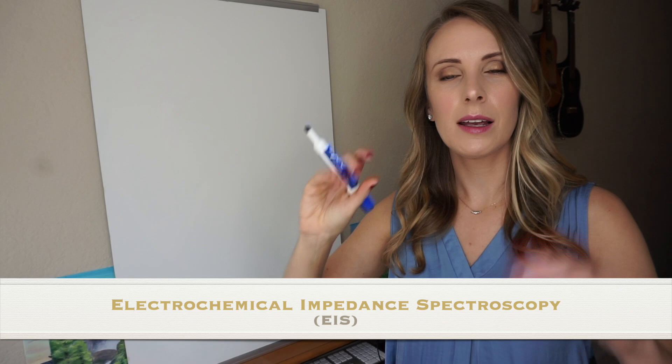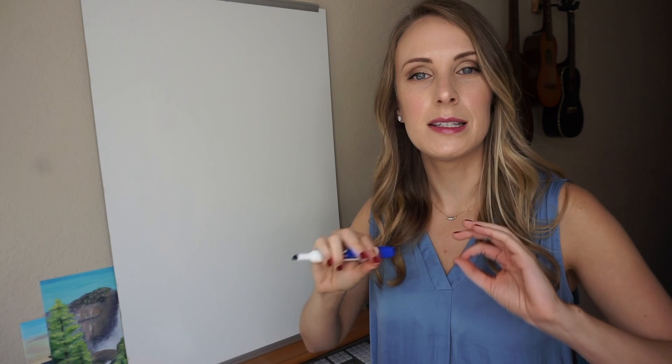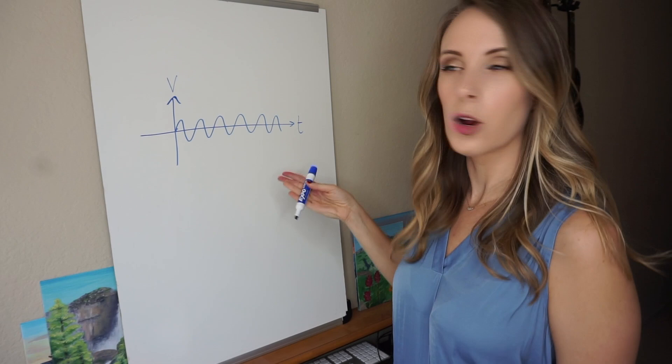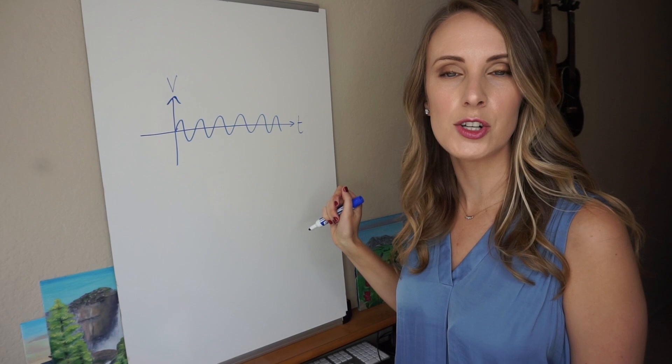Now when we perform EIS, we're applying a small current to the battery. The current we apply is an alternating current, or an AC current. This is the representation of the current, where over time, we have the current fluctuating between a positive and negative potential.